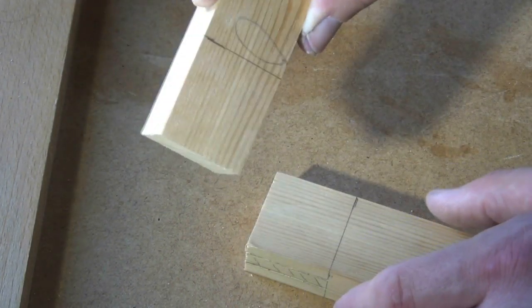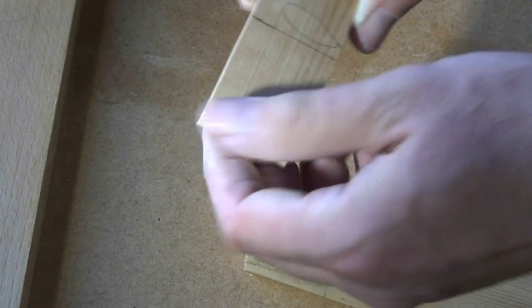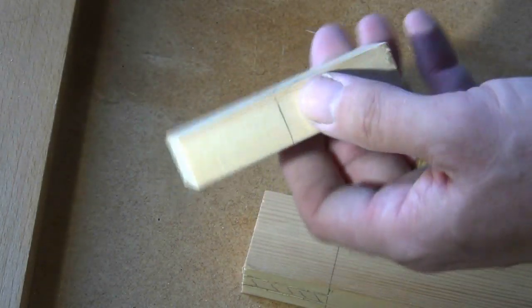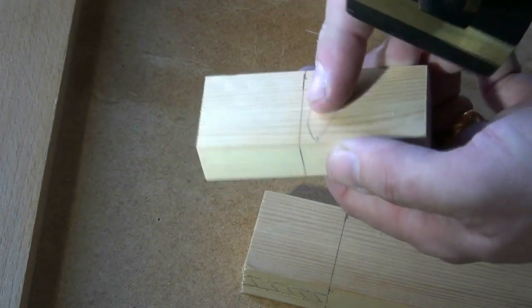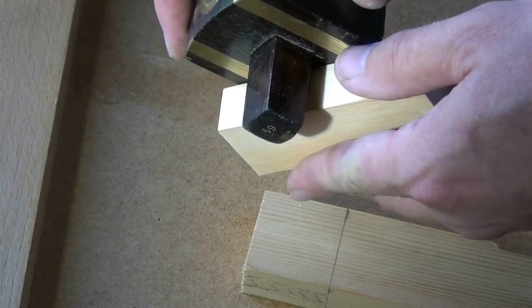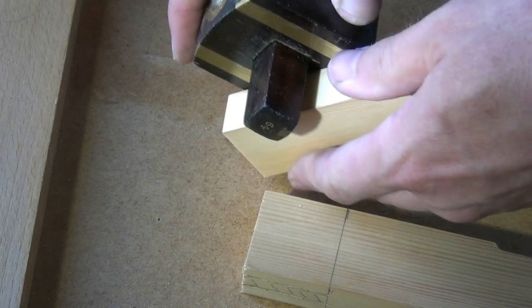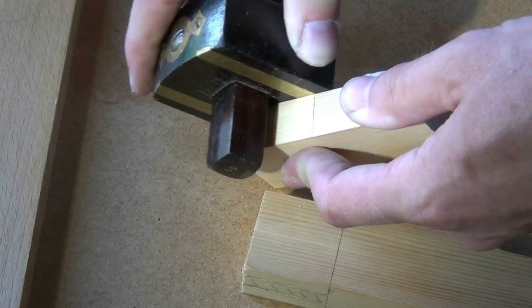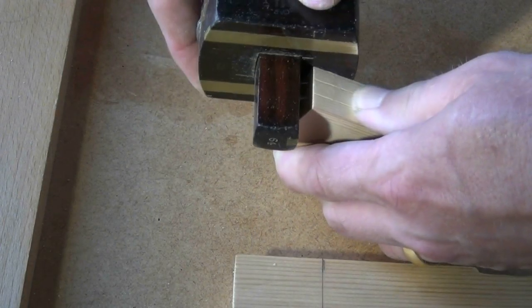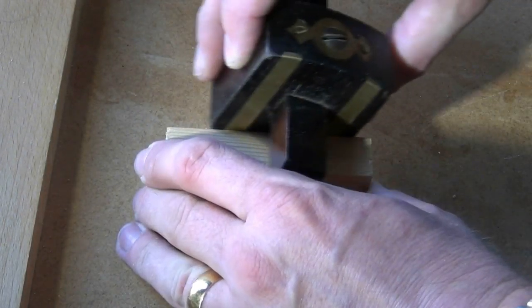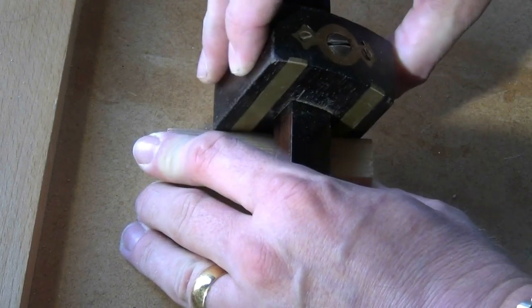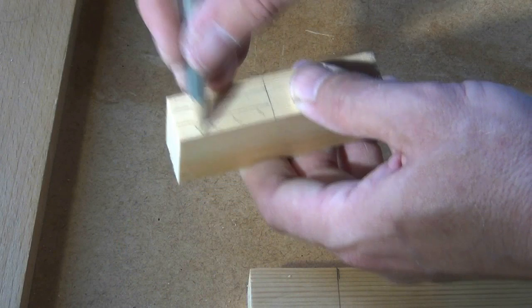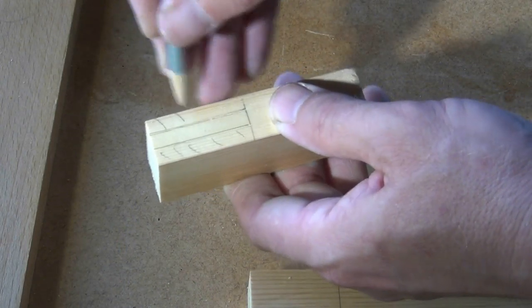On the second component we need to prepare a tenon. Once again marking from the face side along the edges, and so here I'm going to be removing the material on the outside.